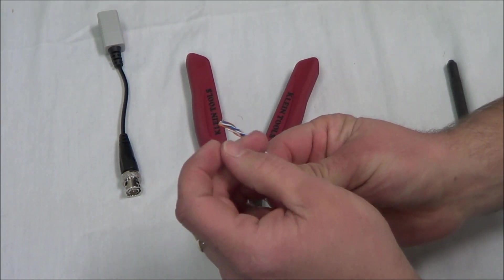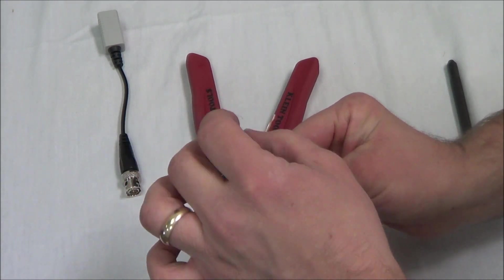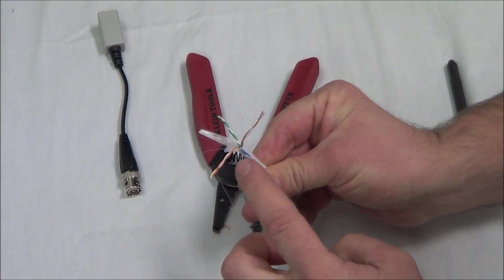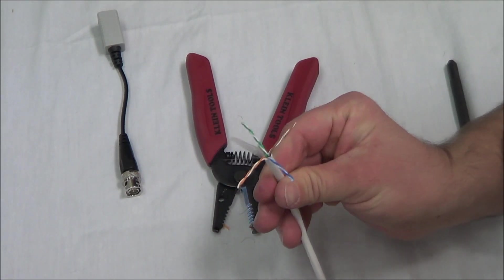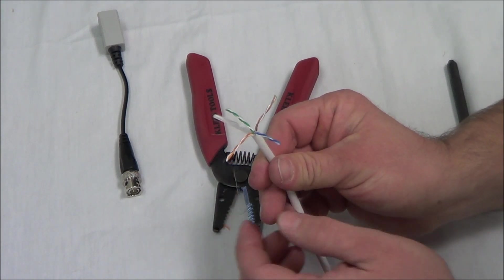Now we have different sets, different colors of wire. Let's go ahead and separate them out. We've got one, two, three, four sets of different colors, and they're twisted together. And of the sets, one solid and one striped.